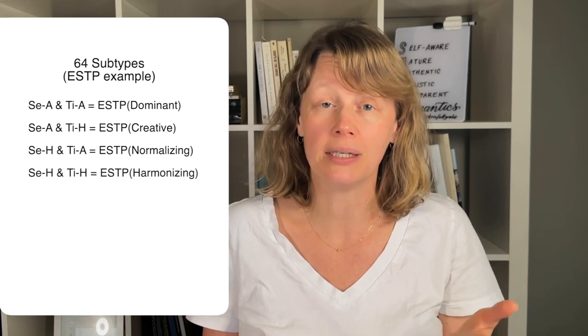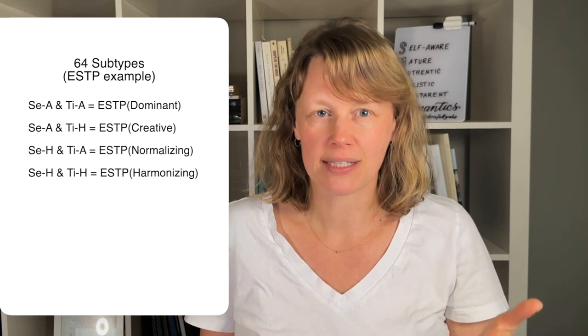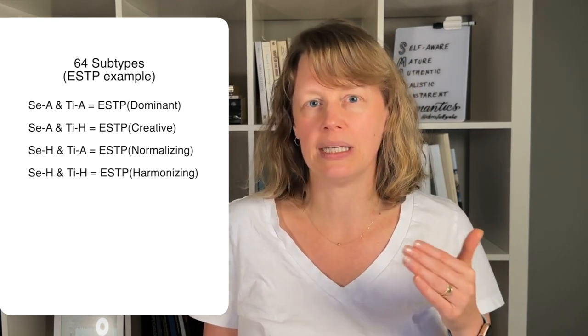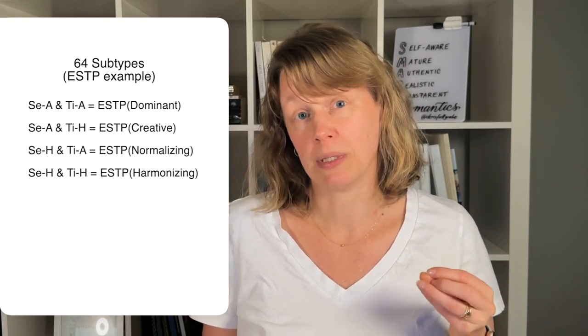The example for the ESTP looks like this. Analytic extroverted sensing and analytic introverted thinking would be an ESTP dominant. Analytic extroverted sensing and holistic introverted thinking would be an ESTP creative. Holistic extroverted sensing and analytic introverted thinking would be a normalizing ESTP. And holistic extroverted sensing and holistic introverted thinking would be a harmonizing ESTP. So if both perceiving and judging functions are in the analytic flavor — AA — the biosocial style is called dominant. If both are in the holistic flavor — HH — it's called harmonizing. If the perceiving function is analytic and the judging function is holistic — AH — the biosocial style is called creative. And if the perceiving function is holistic and the judging function is analytic — HA — then the biosocial style is called normalizing.